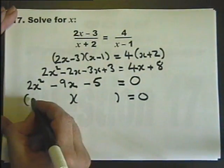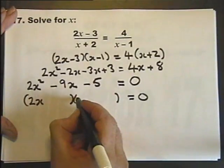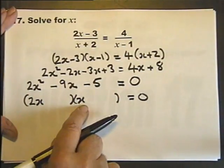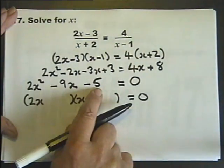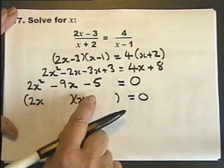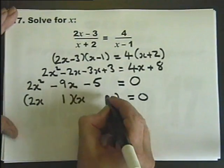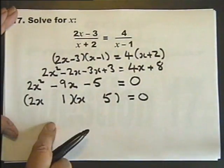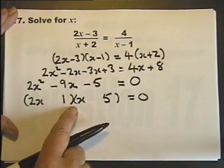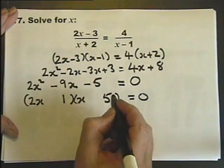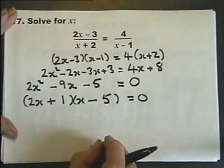That's a prime number, so there's not a lot of choices of what can go there. That's also a prime number, so not many choices: 1 times 5, but which way round? If you put the 1 there and the 5 there, looking ahead that's 10x and that's 1x, so I can get minus 9x as long as I put a minus there and a plus there.